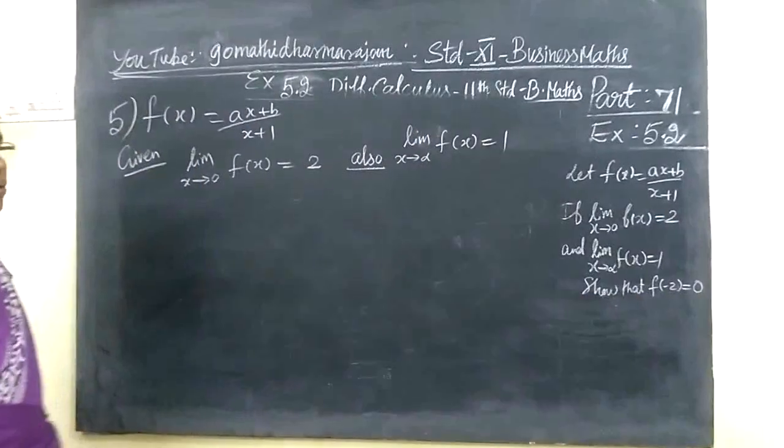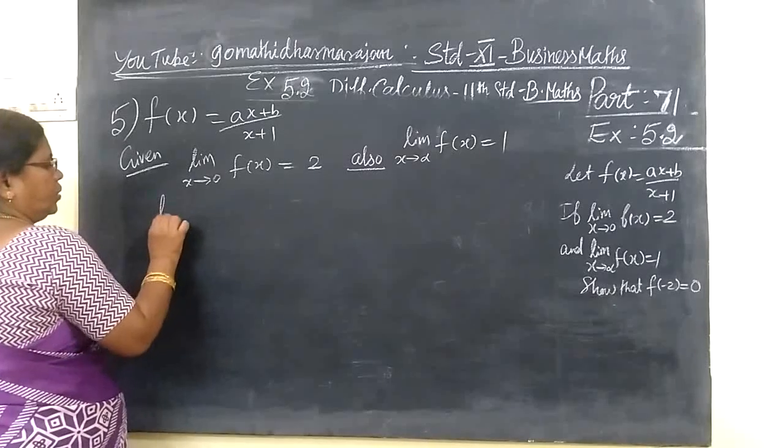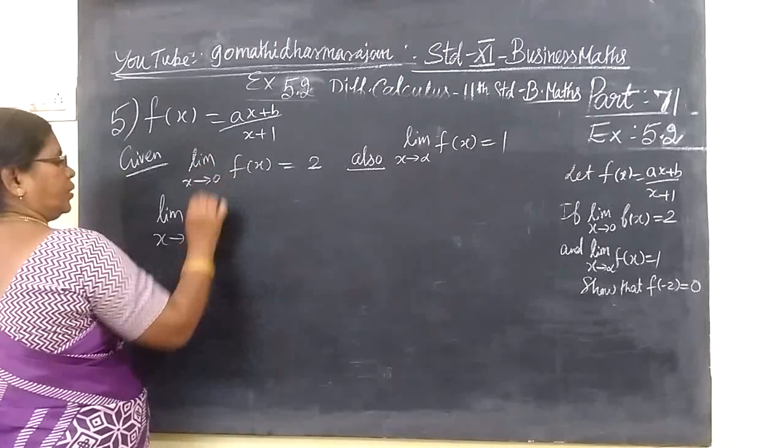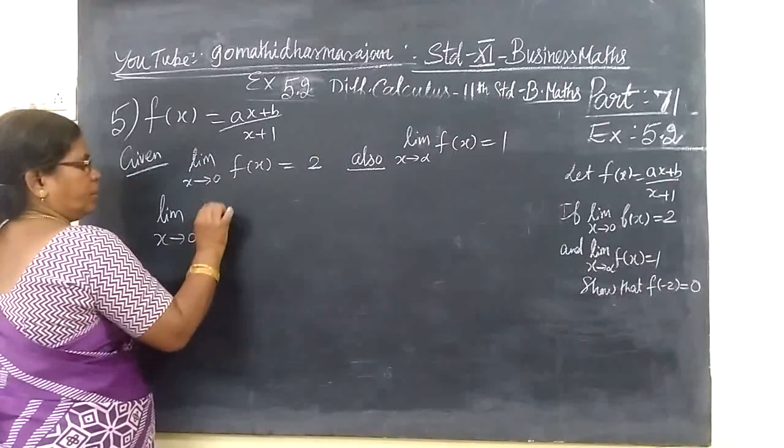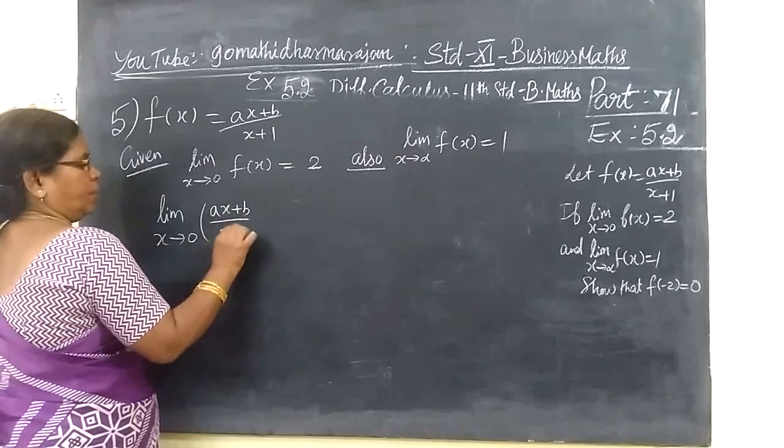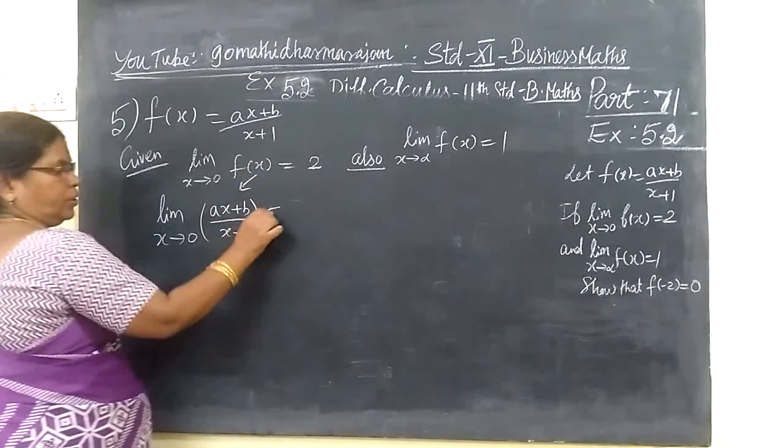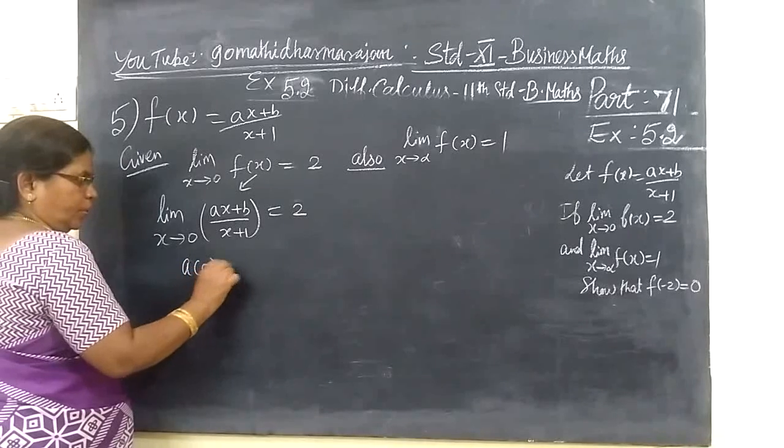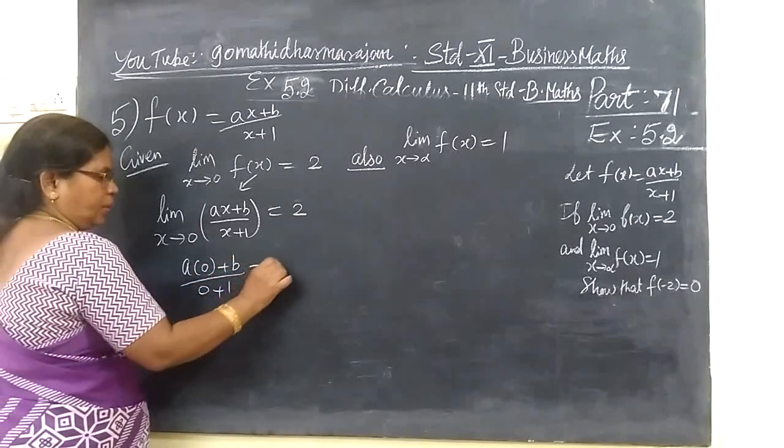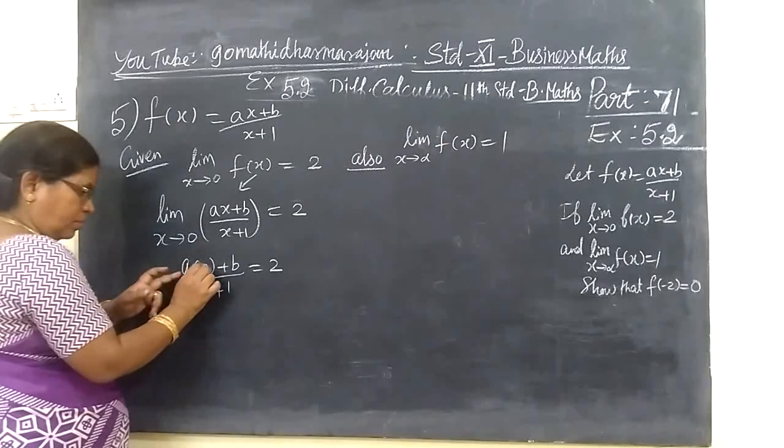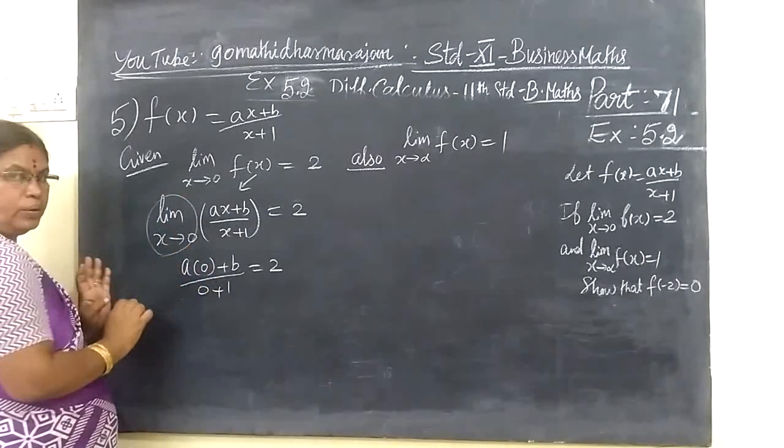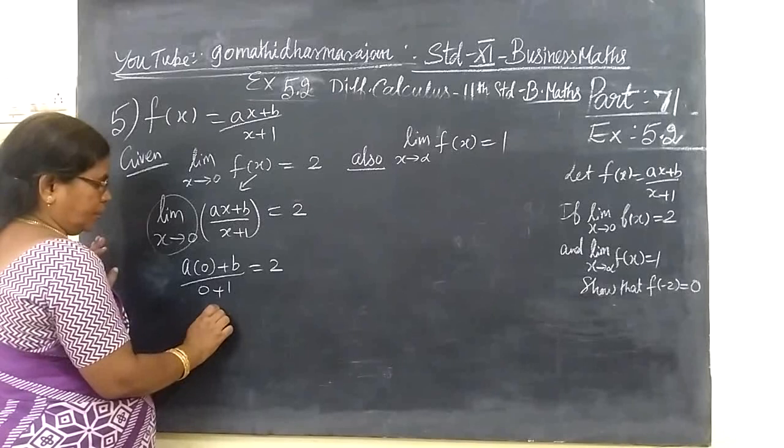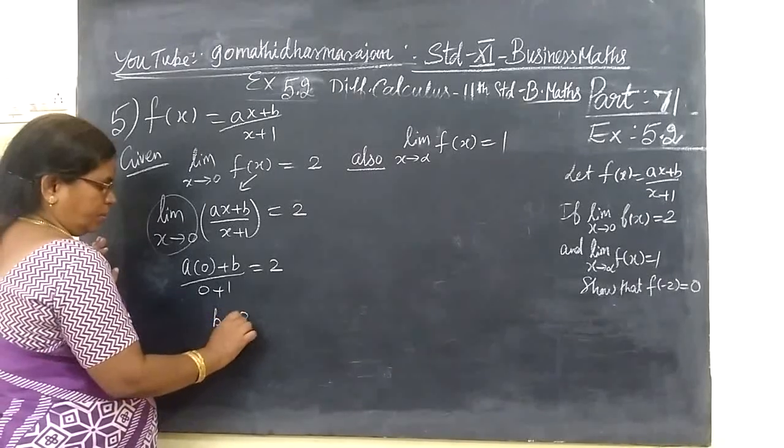F of x is given. A x plus B by x plus 1. Limit as x tends to 0 is equal to 2. Now x tends to 0, so B by 0 plus 1 equal to 2. In the value of the limit point, limit equals the function value. So B is equal to 2.